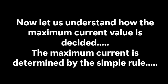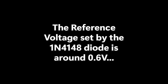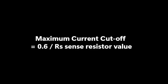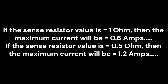The maximum current is determined by the simple rule. The diode reference voltage is around 0.6 volts. So the maximum current is equal to 0.6 divided by the value of the sense resistor. If the sense resistor value is 1 ohm, then the maximum current will be 0.6 ampere.